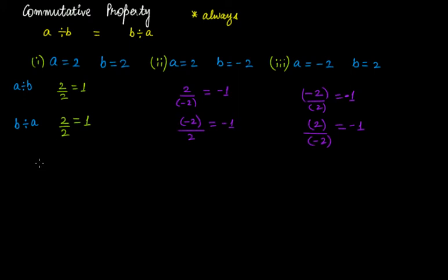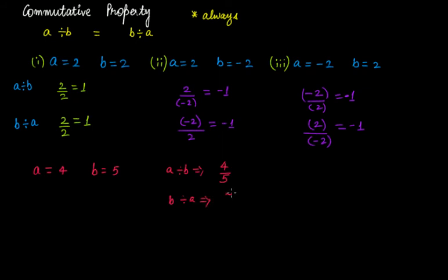Suppose a is 4 and b is 5. Do a divided by b: you get 4 divided by 5. Is 4 completely divisible by 5? No. What about b divided by a? That gives 5 divided by 4. Now, 4 divided by 5 and 5 divided by 4 are not the same. And you can find many such examples where these two will not be equal.